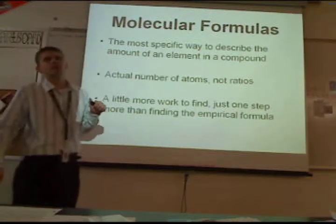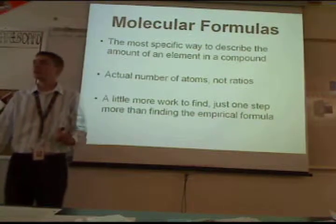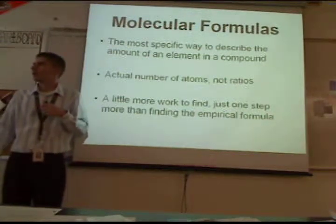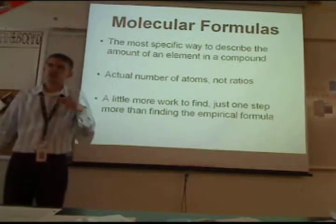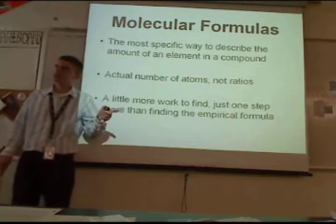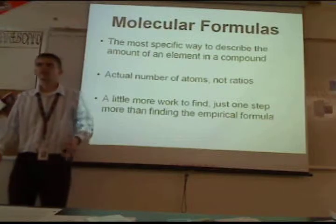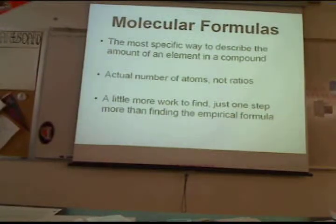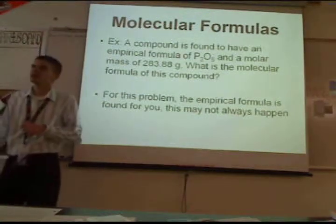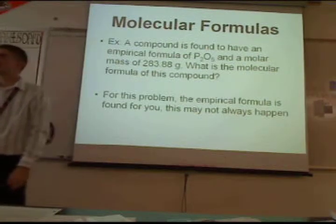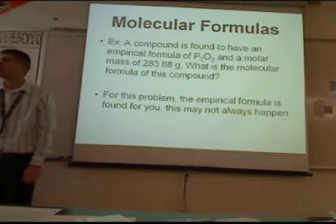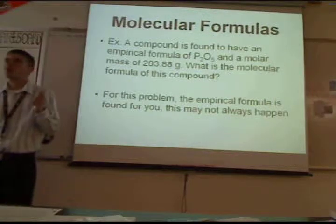Molecular formulas are the most specific way to describe the elements in a compound — they tell you exactly how many atoms there are. It's actual number of atoms, not percentages or ratios — very specific. It's generally one more step of work than an empirical formula, but it tells you a lot more information. Here's an example: you find the empirical formula of a substance — it is P2O5 — and the molar mass of the substance is 283.88 grams. What is the molecular formula?